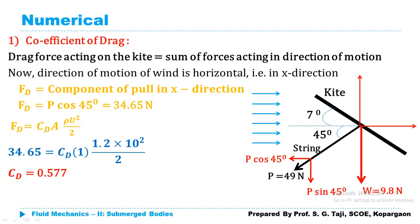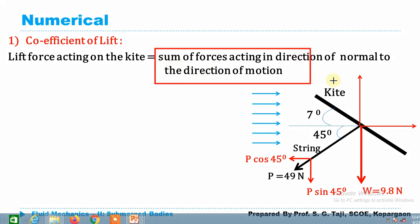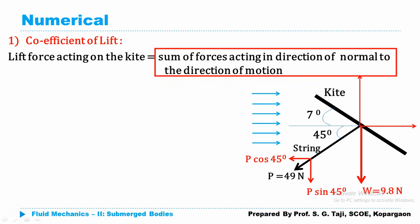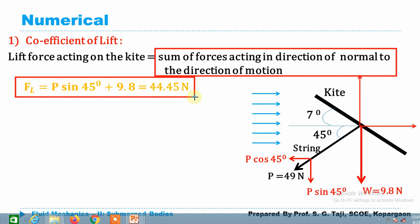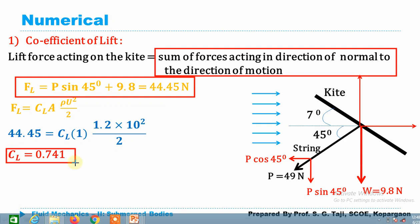For the lift coefficient, we first calculate the lift force — the sum of all forces normal to the direction of motion. The weight component (9.8 N downward) and the vertical pull component P·sin45 both act downward, so FL = 9.8 + P·sin45 = 44.45 N. Using the lift force expression, the coefficient of lift CL comes out as 0.741.